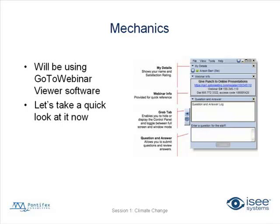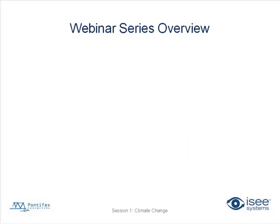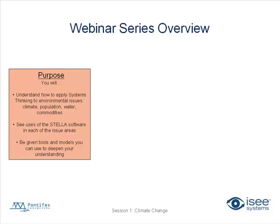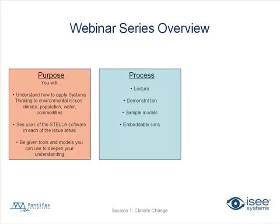Let's get into the session itself. This is the beginning of the first session of a four-parter. In this four-part series, we're going to have a purpose of helping you understand how you can apply systems thinking to environmental issues, how to use the Stellar software in each of those areas, and there will be some tools and models that we'll be giving you each session that you'll be able to take away, keep practicing on, sharing, etc.